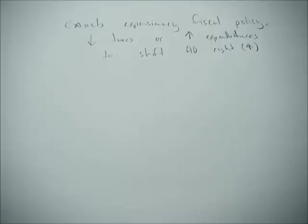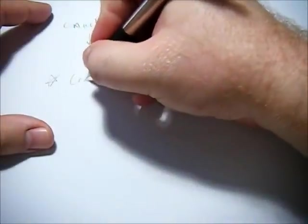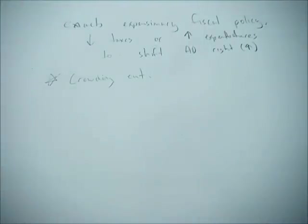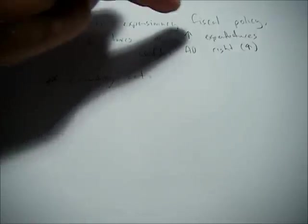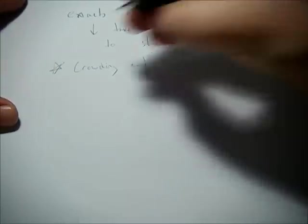So what happens in this scenario, or what can happen, is that crowding out can occur. Crowding out occurs when the government essentially takes money away from private firms that would like to borrow it. So if the government didn't borrow the money, private firms would and they would invest it. But if the government takes that money through lowering taxes or increasing expenditures, then private firms no longer have access to it. So how does this work? Let's go through the process of crowding out.